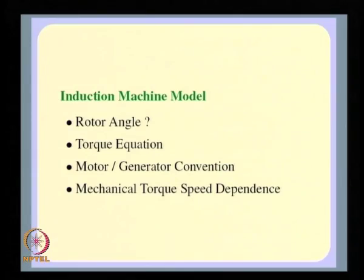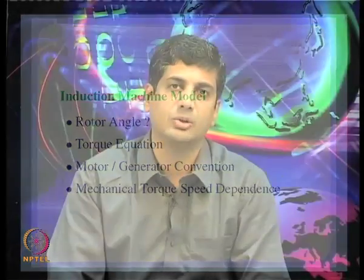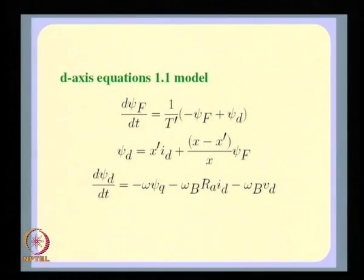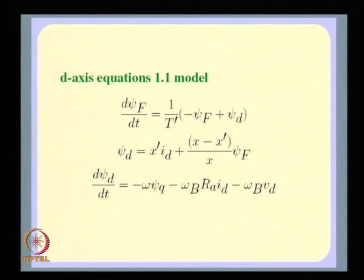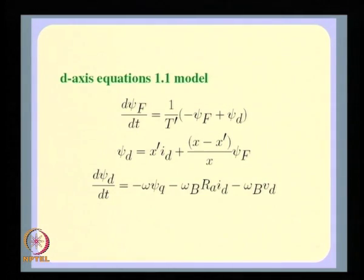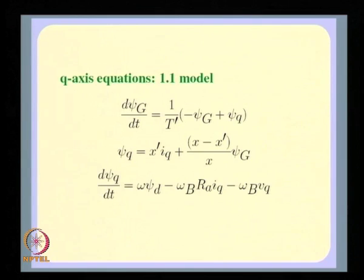If you look at the synchronous machine equations, they seem to have rotor angle dependence. How do we show that induction machines are in fact not dependent on the rotor angle, even though you can get an induction machine model by modifying a synchronous machine model? The induction machine model is obtained from the 1.1 synchronous machine model by neglecting E_FD and setting all transient time constants, transient reactances, and steady-state reactances equal on the D and Q axes.